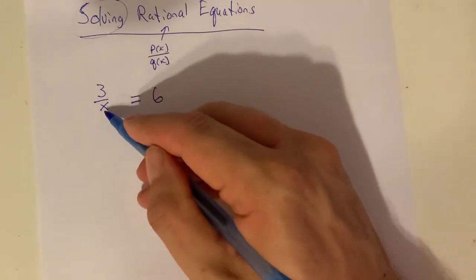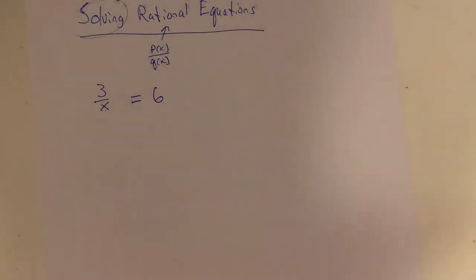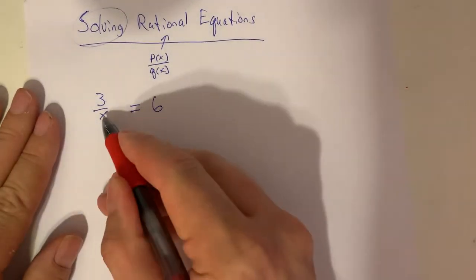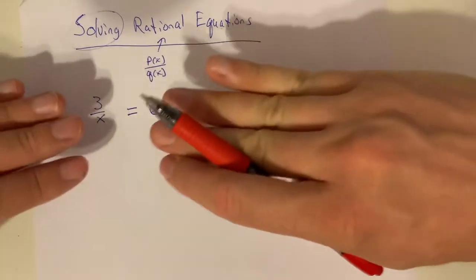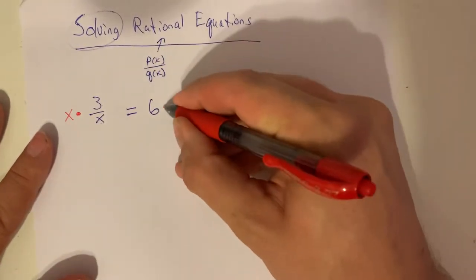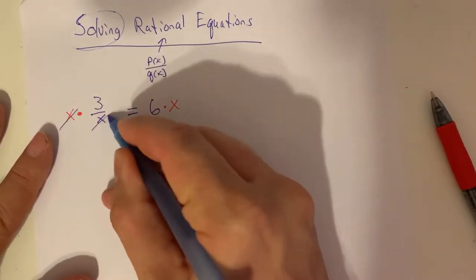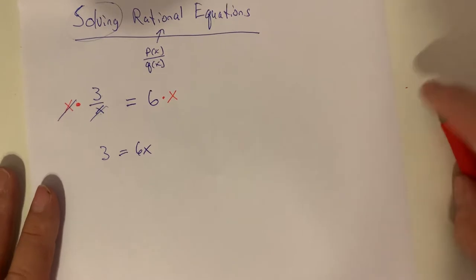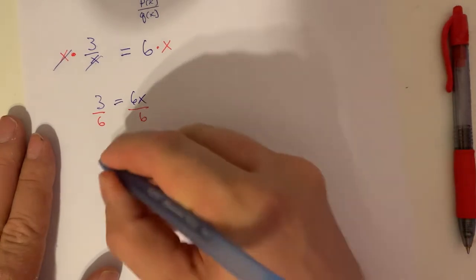We're looking for 3 divided by what will give us 6. This is a fairly easy rational equation and it demonstrates our basic techniques. Whenever we have something dividing, we can undo it by multiplying. We can multiply both sides by x — dividing by x and multiplying by x cancel out — and we get 3 equals 6x. Dividing both sides by 6 gives x equals one half.